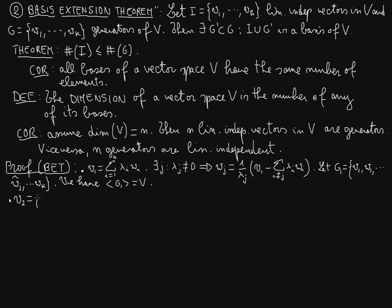As a set of generators we will have a linear combination of V2 in function of elements of G1 that will look like beta 1 times V1 plus a linear combination for i different from j.